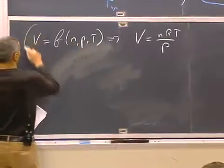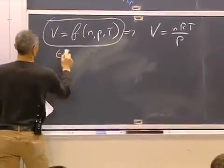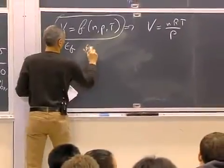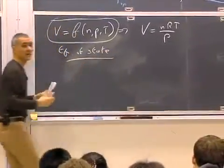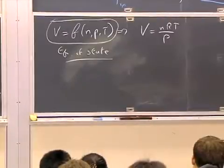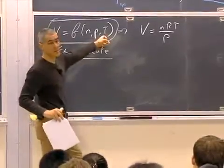This is called an equation of state. It relates state properties to each other. In this case, it relates the volume to the pressure and the temperature.